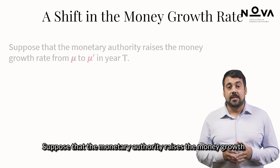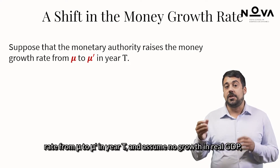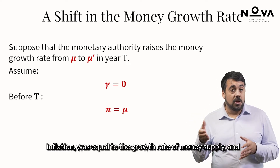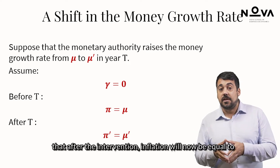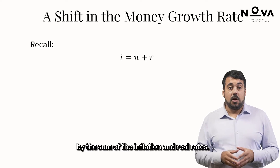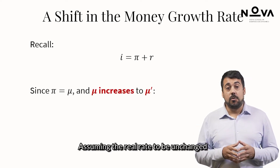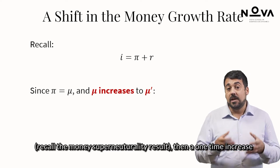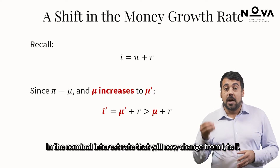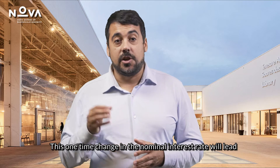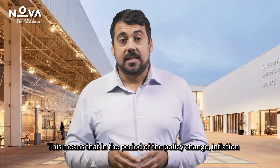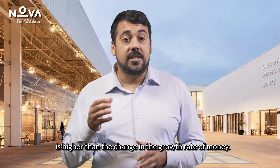We should make one remark. Suppose that the monetary authority raises the money growth rate from mu to mu prime in year T, and assume no growth in real GDP just to keep this simple. Then before the intervention, inflation was equal to the growth rate of money supply, and after the intervention, inflation will now equal the new growth rate of money supply. However, remember that the nominal interest rate is given by the sum of the inflation and real rates. Assuming the real rate to be unchanged — recall the money super neutrality result — a one-time increase in the money growth rate mu will lead to a one-time increase in the nominal interest rate, changing from I to I prime. This one-time change in the nominal interest rate will lead to a decrease in money demand and a one-time shift upwards in the price level. This means that in the period of the policy change, inflation is higher than the change in the growth rate of money.